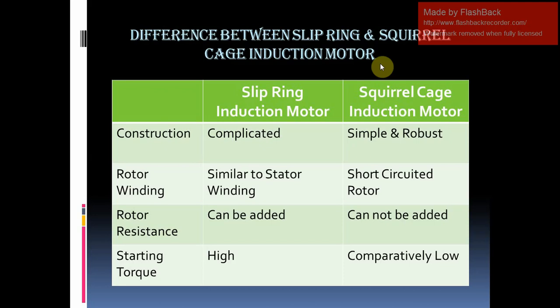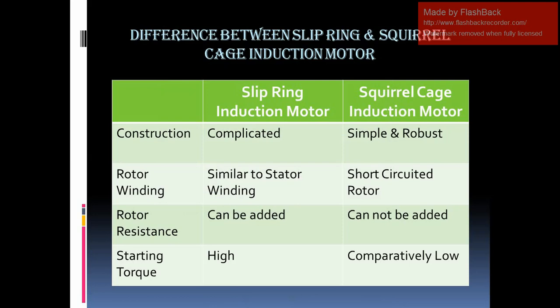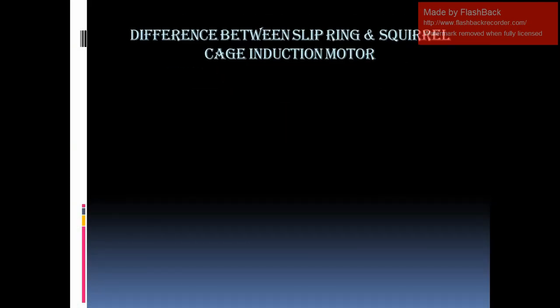Our next topic is starting torque. In case of slip ring induction motor, external resistance in the rotor circuit can be added to improve starting torque. While in case of squirrel cage induction motor, external rotor resistance cannot be added and the rotor resistance is very low, which is why the starting torque is comparatively very low.